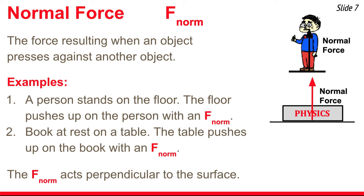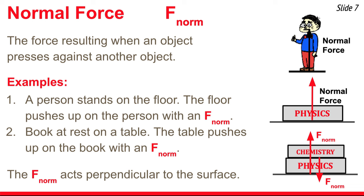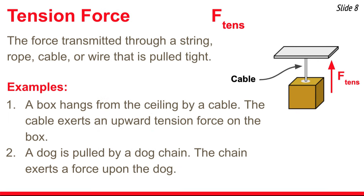In both of these situations, the normal force acts from below because the surface pressing on the object is below the object. But it doesn't have to happen that way, nor does there have to be just one normal force. For example, a physics book pressing against the table and also against a chemistry book from above results in two normal forces — the table pushes up on the physics book and the chemistry book pushes down on the physics book. We call it the normal force because it acts perpendicular to the surface — we borrow the word 'normal' from math class, meaning perpendicular to.